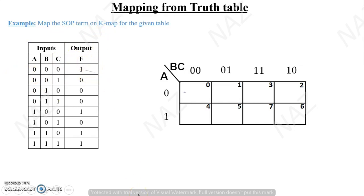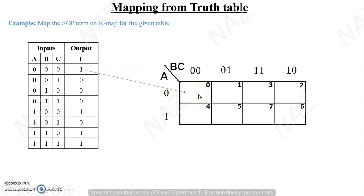How will I map it? You will see. A is 0, B and C is 0, 0. So A=0, B=0, C=0 — find this position for the cell. Here, F's value is 1, so I am going to map 1 over here.